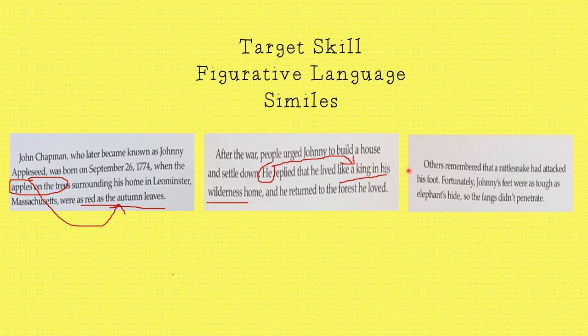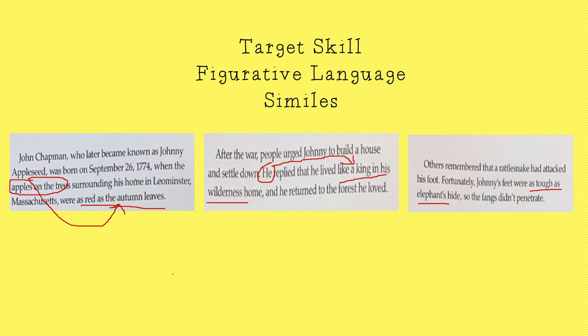Let's look at the last one. Others remembered that a rattlesnake had attacked his foot. Fortunately, Johnny's feet were as tough as elephant hide, so the fangs didn't penetrate. As tough as elephant hide — what were as tough as an elephant's hide? Johnny's feet were as tough as an elephant's hide. And there is your simile.